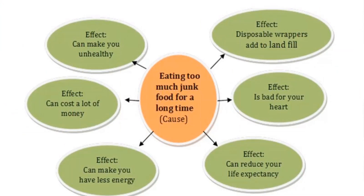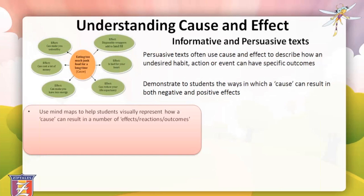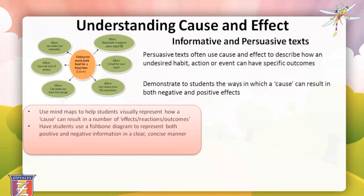You could also discuss how persuasive texts often use cause and effect to support an opinion. For example, a persuasive text about living a healthy life could use the argument that eating too much junk food for a long time — the cause — can ultimately make you unhealthy — the effect. These ideas can be displayed on a mind map to help children plan their persuasive text, with the cause in the centre and the effects in bubbles around it.